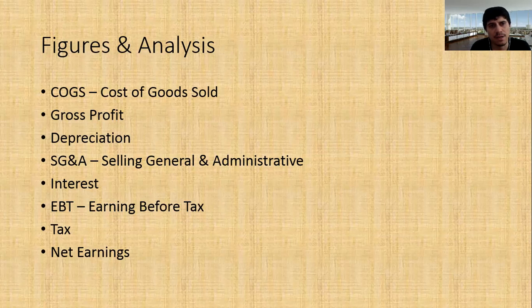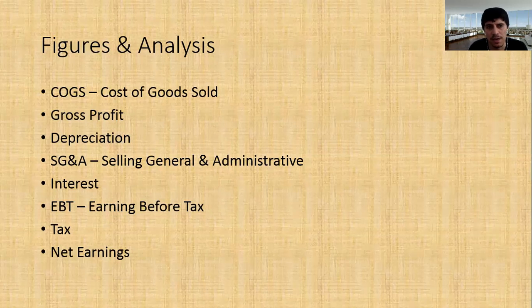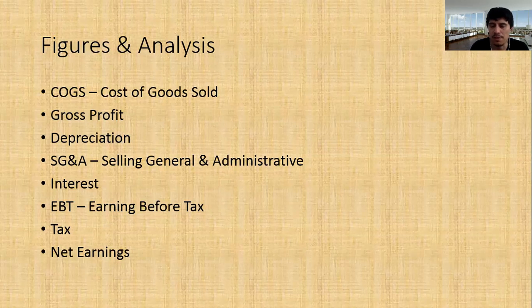Moreover, we have here SG&A or selling general and administrative costs, interest, earning before tax or in other words, we can shorten it down to EBT. And at the end, as a law-abiding citizen, we have to pay the taxes to the government. And at the end, net earnings is what we have.